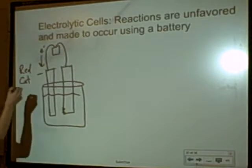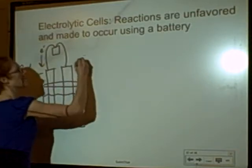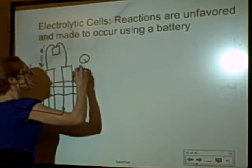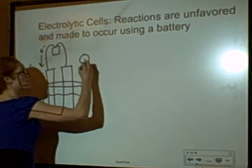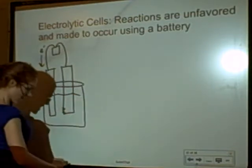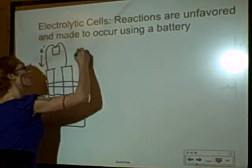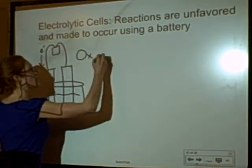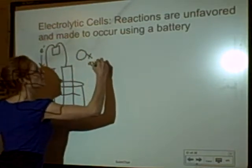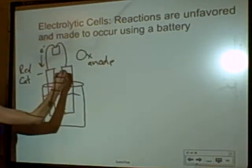Reduction happens at the cathode, which is negative. So, oxidation is going to happen at the anode. Oxidation happens at the anode.